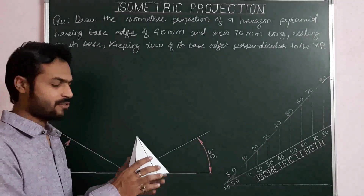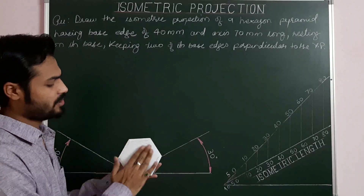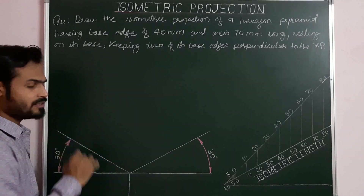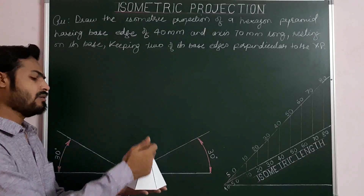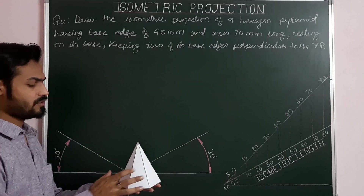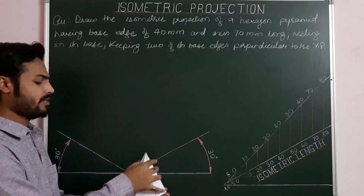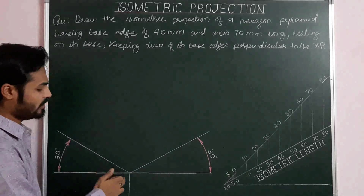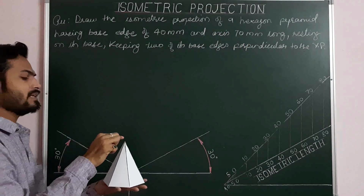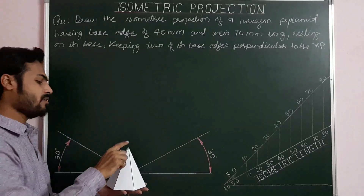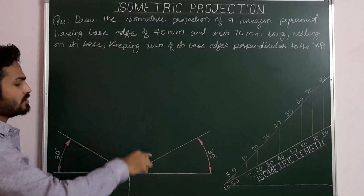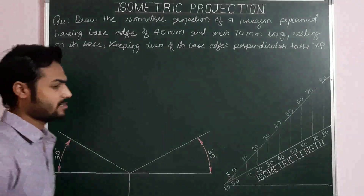For the isometric projection, it is always better to start from the base. Here, we will project this base first along the horizontal plane. Then we will mark the center of the hexagonal base. All the generators are inclined lines meeting at the apex, and the length of the generators is not given to us directly. So what we have to do is mark the center and then draw the solid axis of this pyramid by drawing a line parallel to the third iso-axis starting from the center, with length 70 mm, to get the apex point. In the last step, we will join lines from the apex to each corner of the solid.